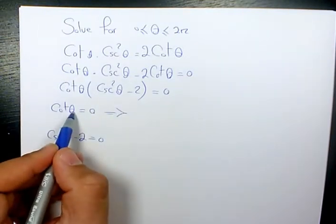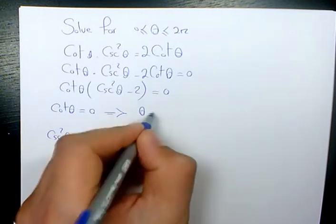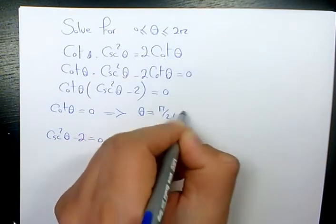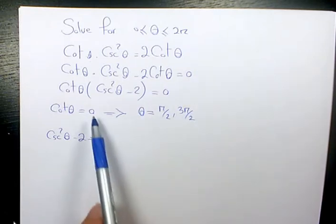So cotangent theta is 0 when cosine is 0. So cosine pi over 2 and cosine 3 pi over 2 are 0. So cotangent pi over 2 and cotangent 3 pi over 2 are 0.